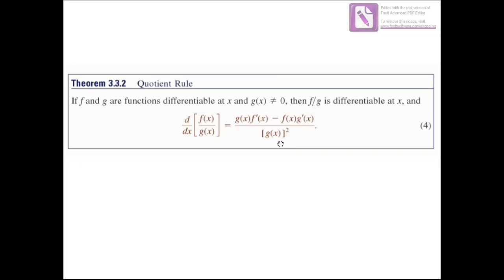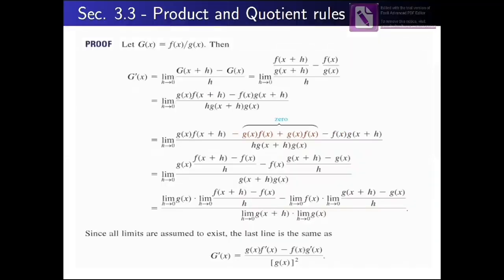The order here is important. The derivative of f over g equals g·f prime minus f·g prime, divided by g squared. First differentiate f, multiply by g, then subtract f multiplied by the derivative of g, divided by g squared. The order matters when applying the quotient rule: first the derivative of f times g, minus the derivative of g times f, divided by g squared.